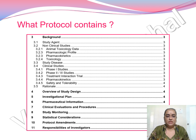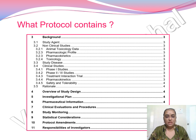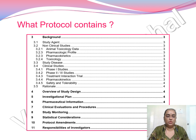Then there is the study design and study disease section. For example, in a diabetes study, disease-related information is provided. The protocol also covers Phase 1 and Phase 2 studies, treatment interaction trials, pharmacokinetics, safety and tolerability, and the rationale. If the study has gone through Phases 1 and 2 and is moving to Phase 3, a background of what the molecule went through, its results, and the rational reason behind it — looking into pharmacokinetics, safety, and tolerability — must be included.